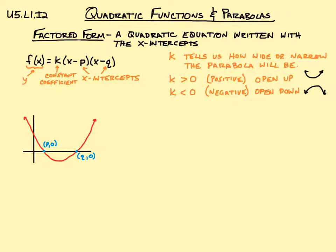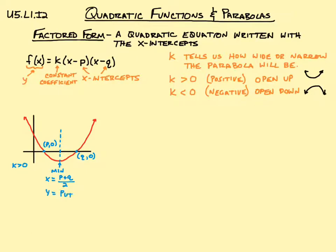Since this parabola opens upwards, k must be greater than zero. Right in the middle of the two x-intercepts, we have a line of symmetry where the whole parabola could fold over on itself. This line of symmetry is also where the minimum or maximum value of the quadratic function is. To find that x value, we find the average of the x-intercepts: p plus q divided by 2. Then we plug that x value into the function to find the y value.